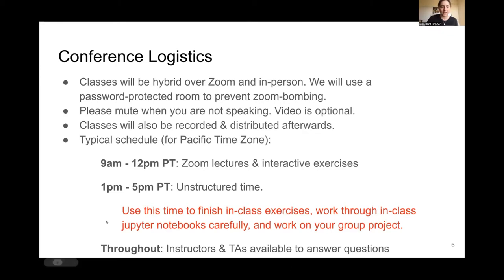The typical schedule in Pacific Time is 9 AM to 12 PM for Zoom lectures and interactive exercises. The rest of the workshop is unstructured time for you to finish in-class exercises, work through Jupyter notebooks more carefully, and work on your group project. You don't have to spend those hours immediately after the workshop — coordinate with your group members to pick good times throughout the week. We've designed this class to take 40 hours of your time: half in lectures and half unstructured. The group project should take about 10 hours.